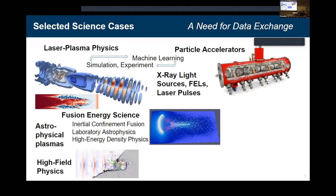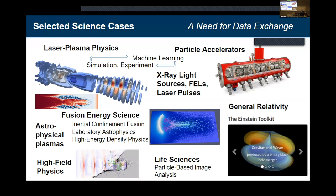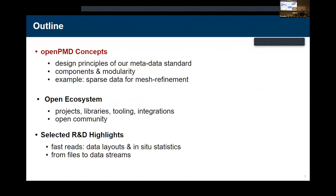The things we model on the plasma side are deeply related to other plasma physics applications — fusion energy science, inertial confinement fusion, astrophysics, and high-field QED physics studies. Interestingly, people from other communities have also adopted our standard, including people who model general relativity and those doing life science image analysis, because we have a relatively fundamental metadata schema that works well for them too.